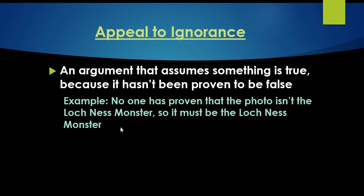The next one is appeal to ignorance. Appeal to ignorance is an argument that assumes something is true because it hasn't been proven to be false. An example would be: no one has proven that the photo isn't the Loch Ness Monster, so it must be the Loch Ness Monster. The burden of proof is on the other person, and since it's never been proven false, therefore it has to be true.